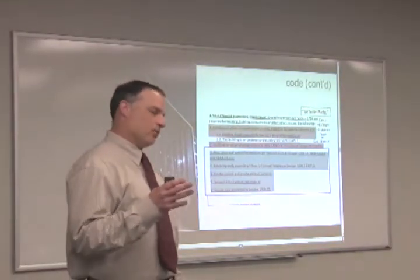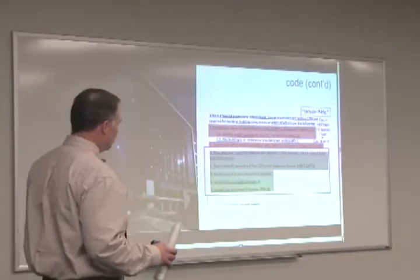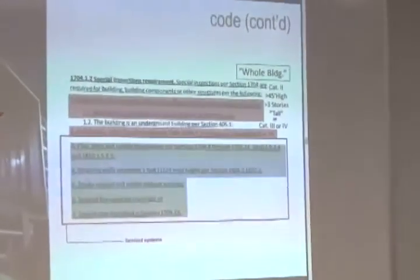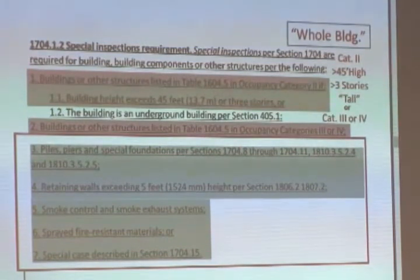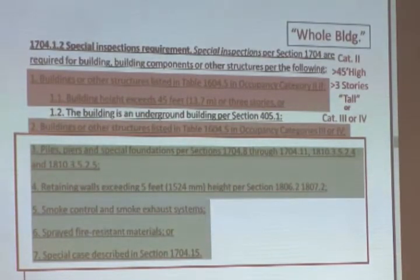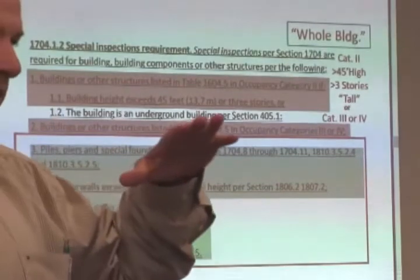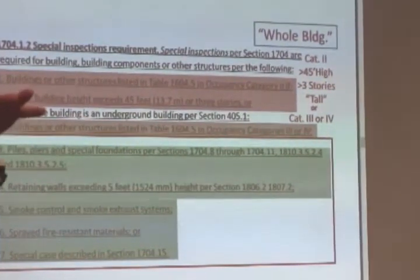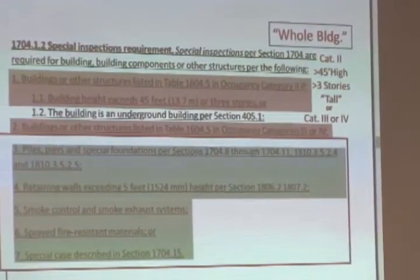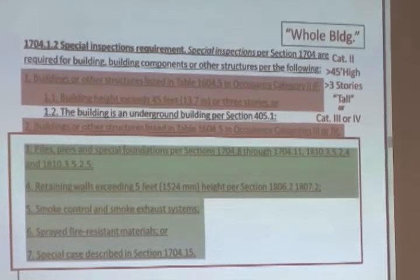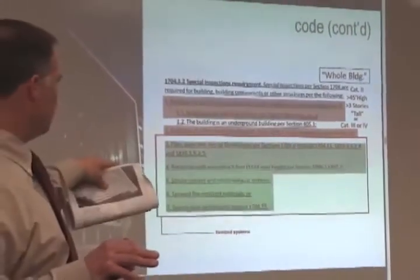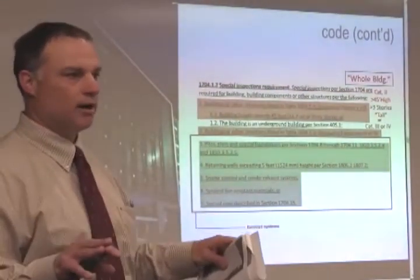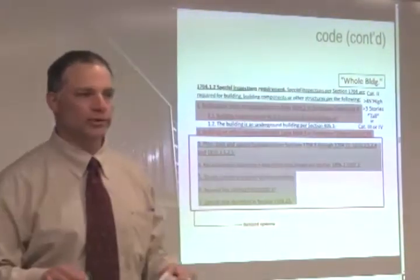Now, the code — and this is where it gets sort of complicated. When we go into the code, section 1704.1.2 is the root of where the code says you shall provide special inspections. From that point, there are two divisions of special inspections. There's the whole building type, which is basically the structural systems inside a building. Then there's a second type — let's call them itemized systems — which are systems that, in any building, if you have them, require special inspections, even in the lowest-level buildings. Itemized systems include things like deep foundations, retaining walls, smoke systems, spray fire protection, and other special engineering systems.